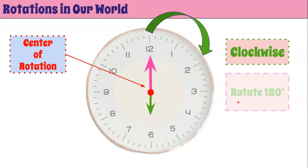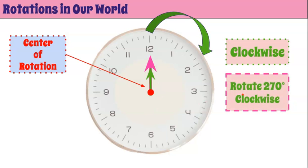Now let's talk about three turns, which would be rotating 270 degrees clockwise. One, two, three — three 90-degree angles giving us our new clock pointing at nine. So 270 degrees is three 90-degree turns.